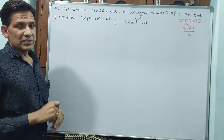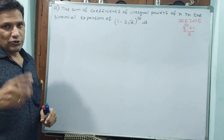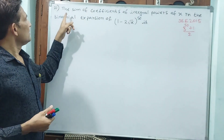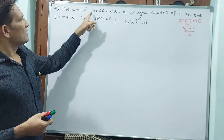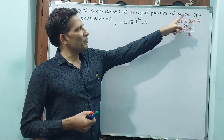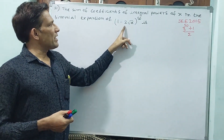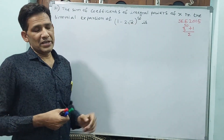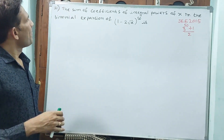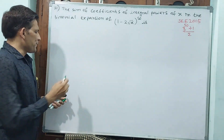We will try to start questions from 2020, 21, 22 — those are the latest questions. See, the sum of coefficients of integral powers of x in the binomial expansion of (1 − 2√x) to the power 50. This is a different model — sum of coefficients.